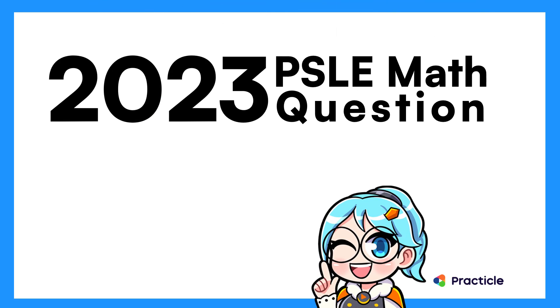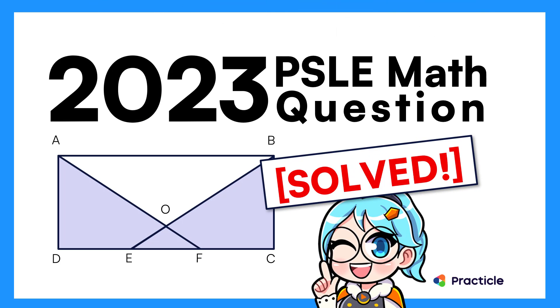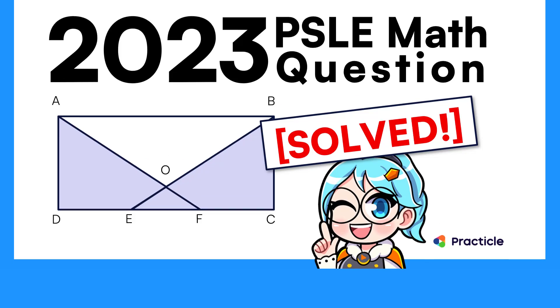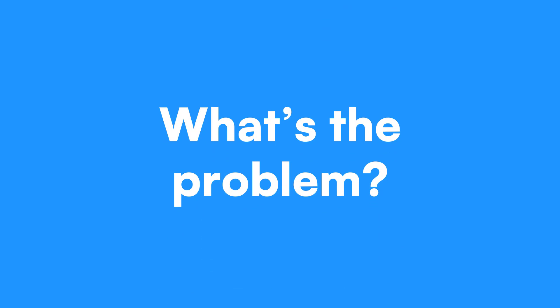Are you ready to solve another PSLE Math 2023 question? This time Raoul, let's solve a question from paper 1 that involves some triangles and a rectangle with a ratio. Let's see what this question is all about.